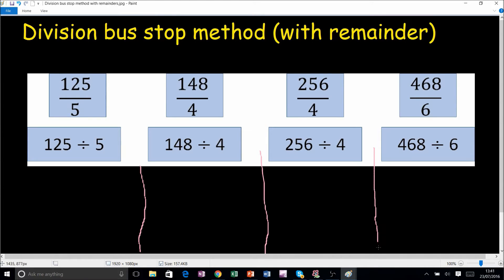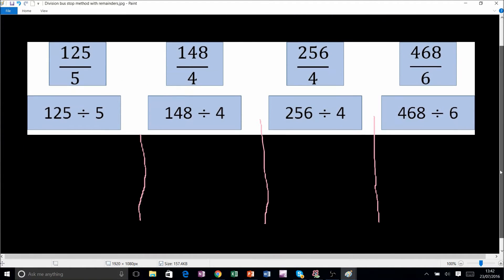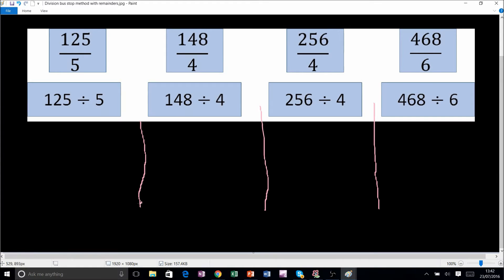Just so you guys remember, for example, 125 over 5 is also the same as 125 divided by 5. That's why I put the two of them here, just so that you know that they both basically mean the same thing. Let's get started anyway, so we've got 5 on the outside and 125 on the inside.